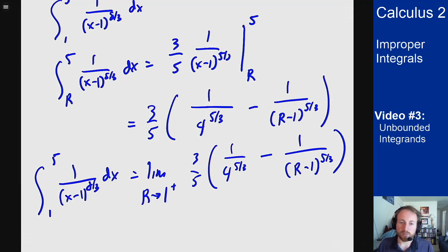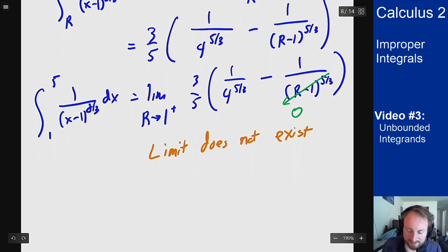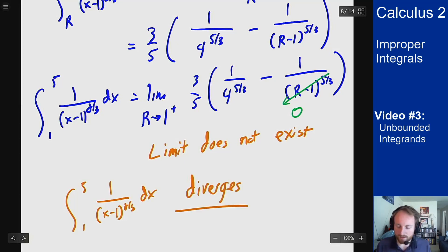And now what happens when I go to plug in r? When I go to plug in r, this term here goes to 0, which means now I have a 1/0 and that's undefined. That goes to infinity, which means this limit does not exist. So we would then say that the integral from 1 to 5 of 1/(x-1)^(8/3) dx diverges.